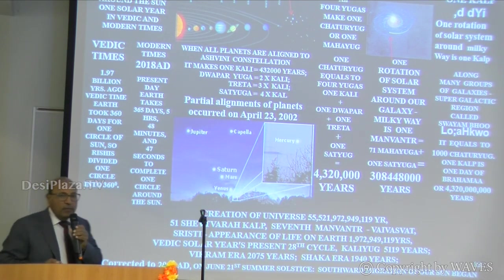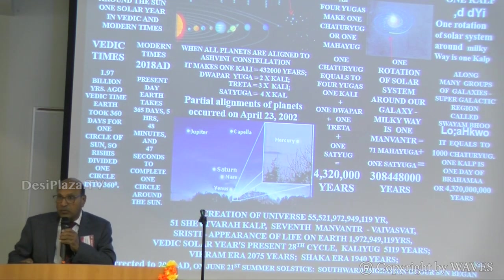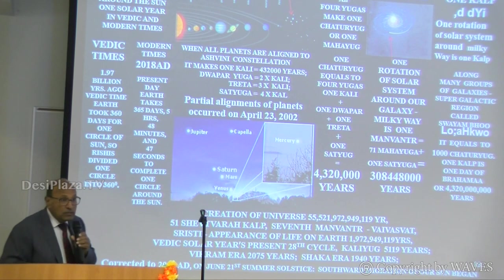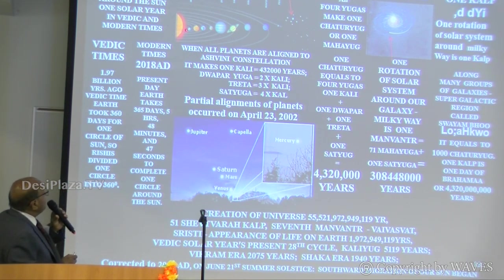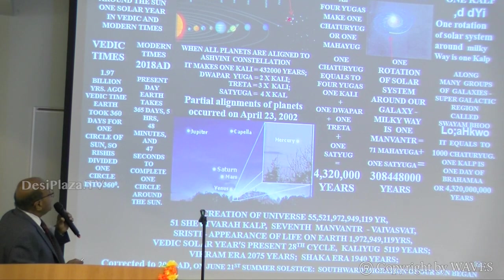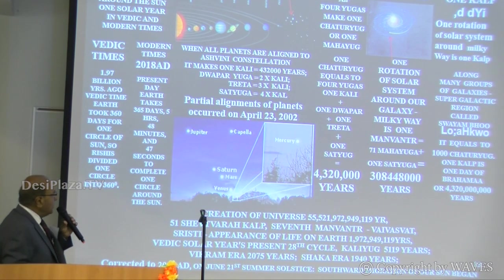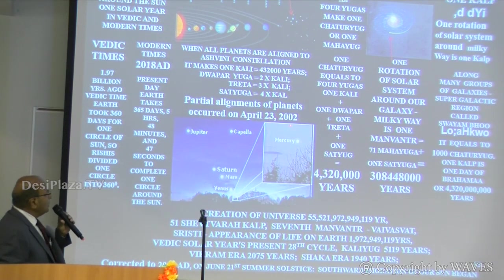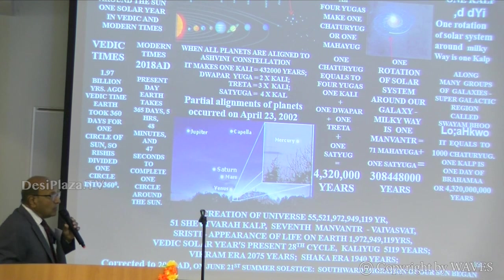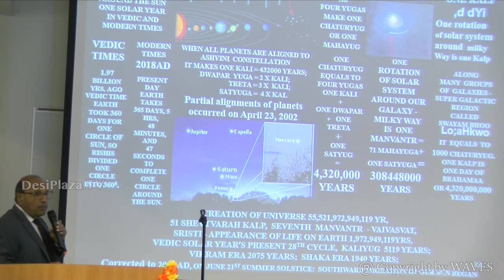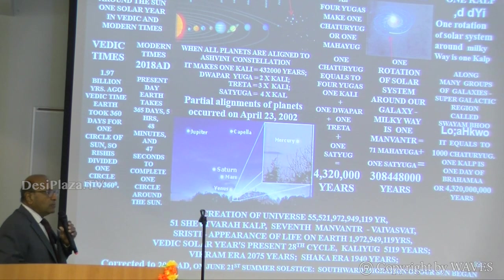How did one Kali come into existence? It's not an imaginary process. The scientific process is this: when all the planets are aligned with the Ashwini constellation, that makes one Kali. And does this happen? Yes, it does. Partial alignment of planets occurred on April 23rd, 2002. That is the scientific basis — not an imaginary figure made up in a room, but cosmic observation arrived at by research scientists, the so-called rishis, thousands of years ago.